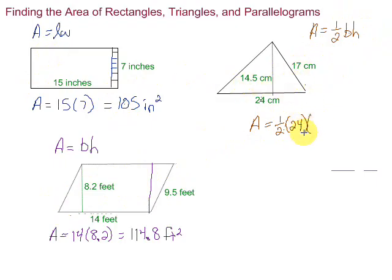is the height 17 or is it 14.5? Well, again, remember I said the height is the perpendicular distance, or the 90 degree angle here, going straight up. So, it would be 14.5 centimeters.